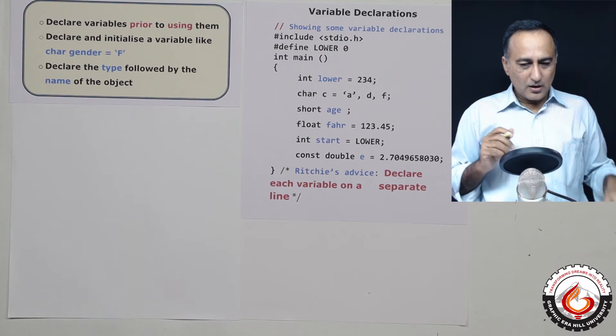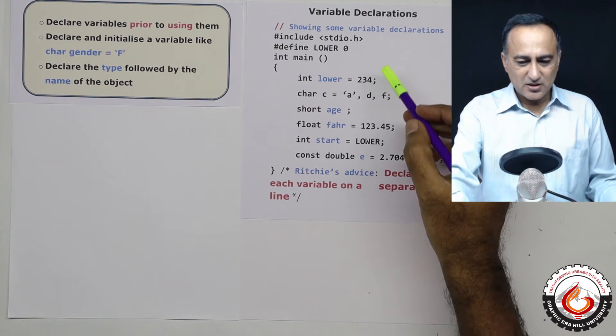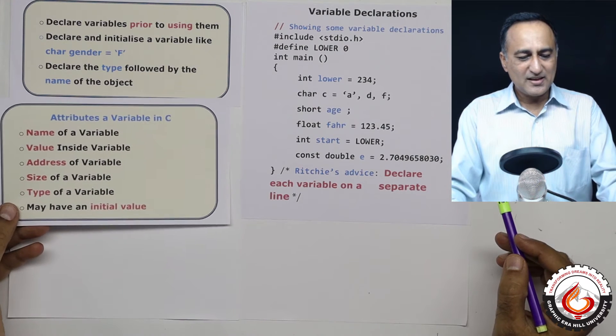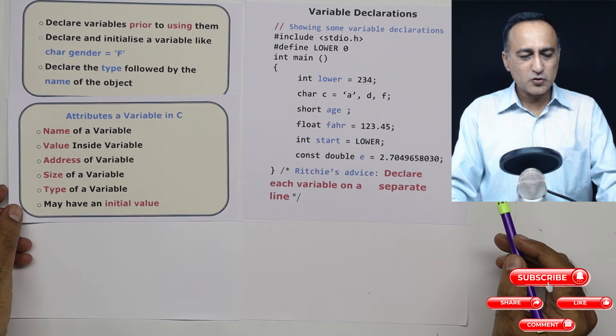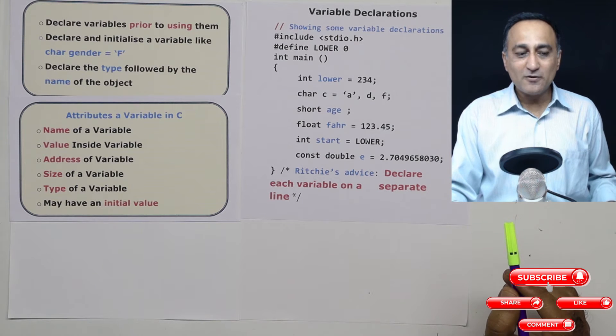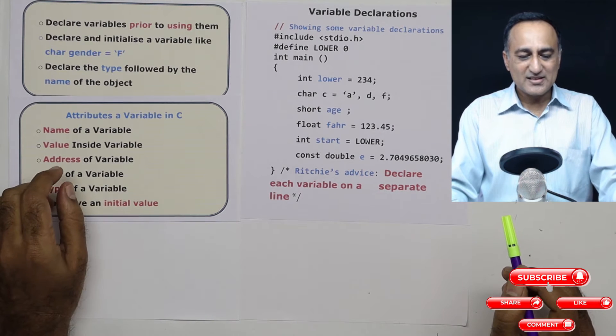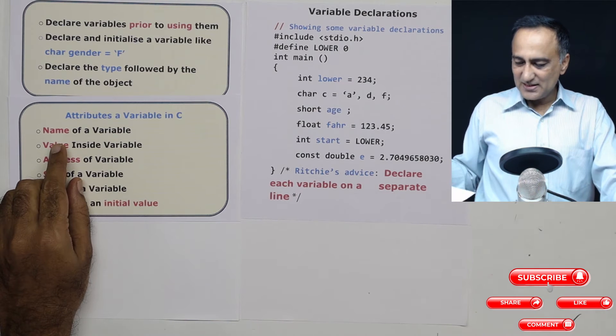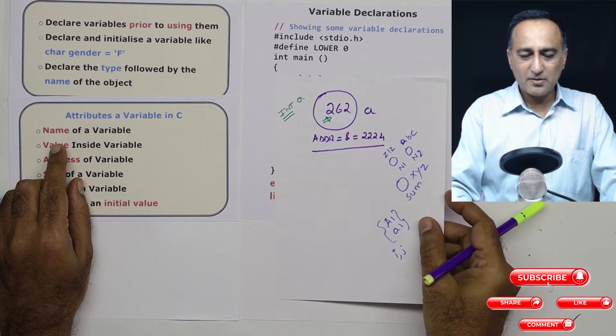Now, before I go up discussing this variable declaration, there are certain attributes associated with variables in C. That means there are certain properties of variables associated in C. First thing is, let us take a look at this diagram here which we referred before.